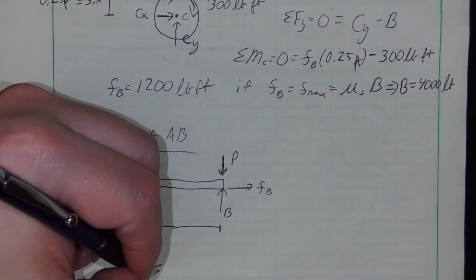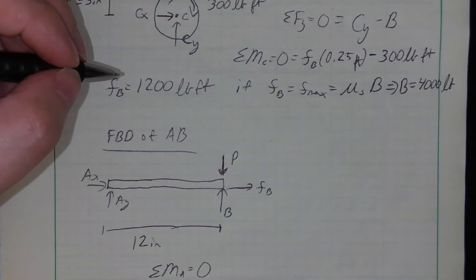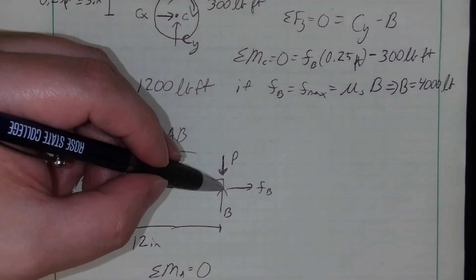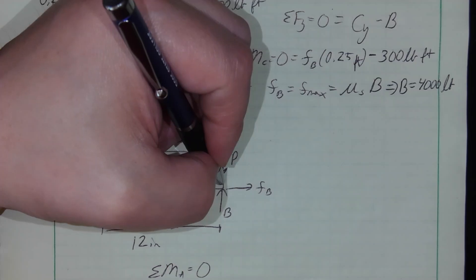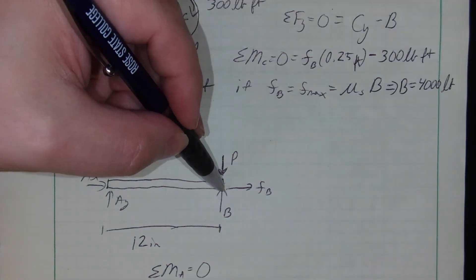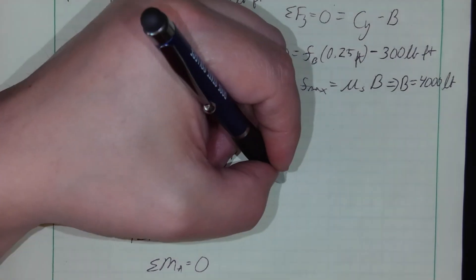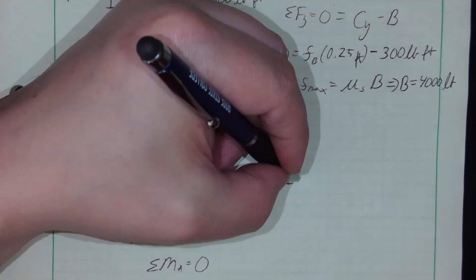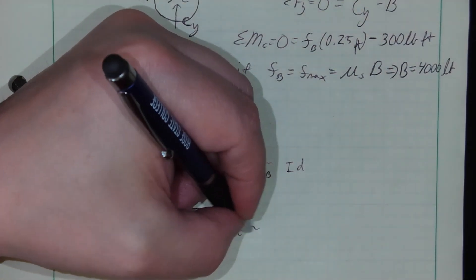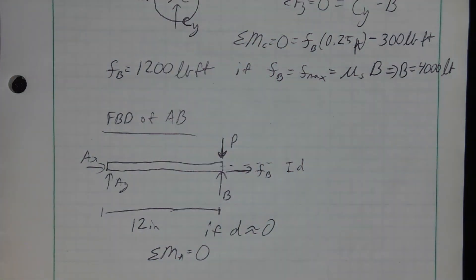I think I can just simply say if I take the sum of moments about point A, assuming this beam is thin and I don't have to worry about, you know, there is a distance between right here in the middle where point A is and this friction at point B. There's a very small distance there, assuming that that distance D there, if we say if D is negligible basically...